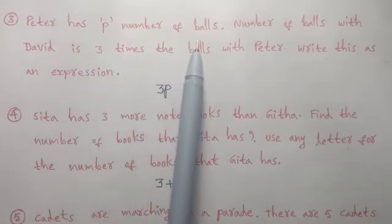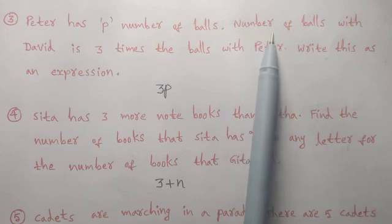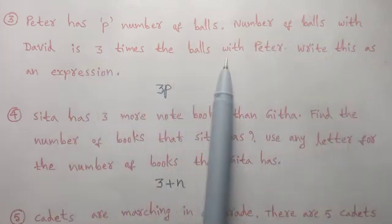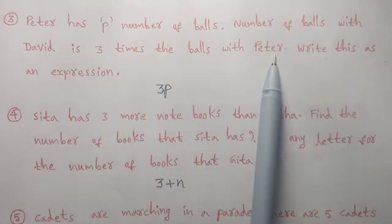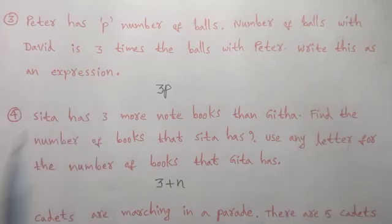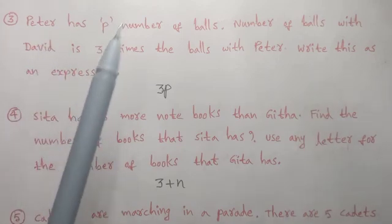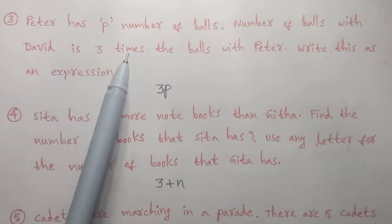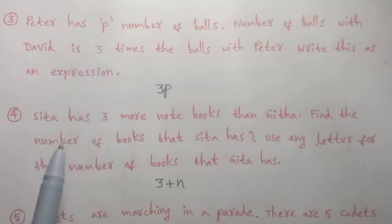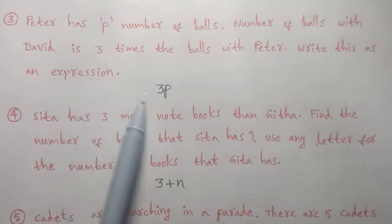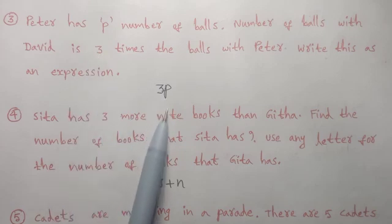Third problem: Peter has p number of balls. The number of balls with David is 3 times the balls with Peter. Write this as an expression. Our expression is 3 into p.